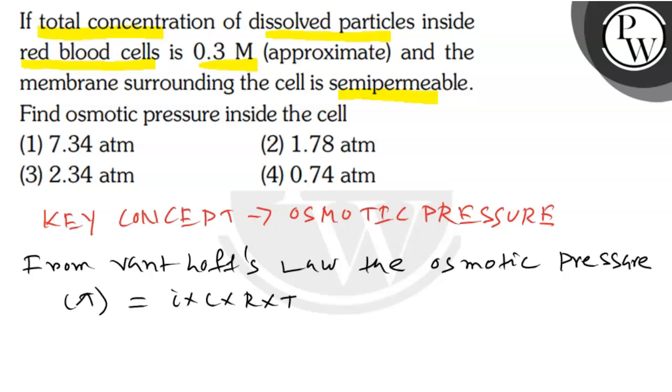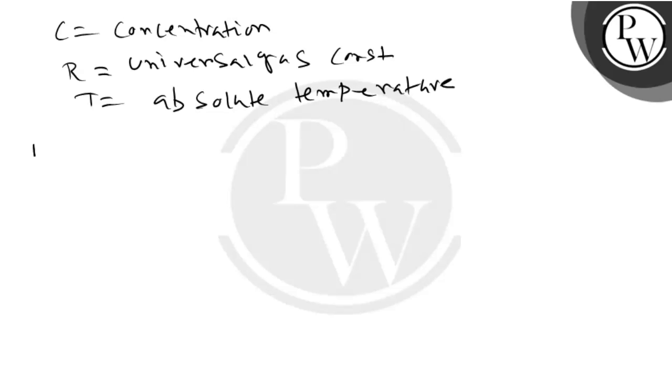Where i is equal to Van't Hoff's factor, c is the concentration, r is the universal gas constant, and t is the absolute temperature.